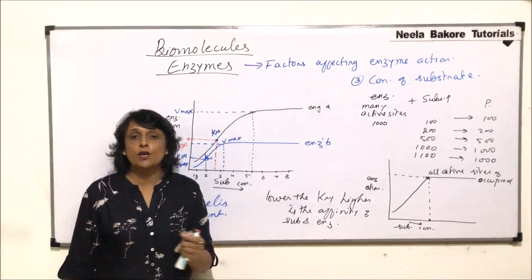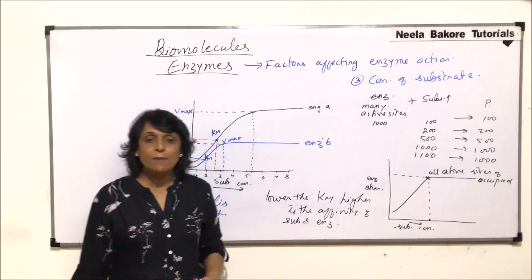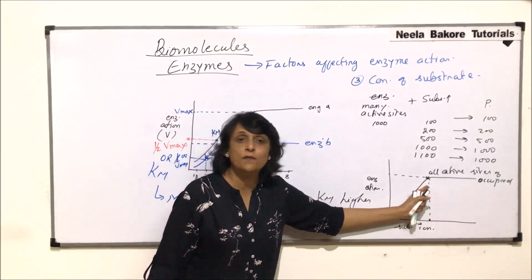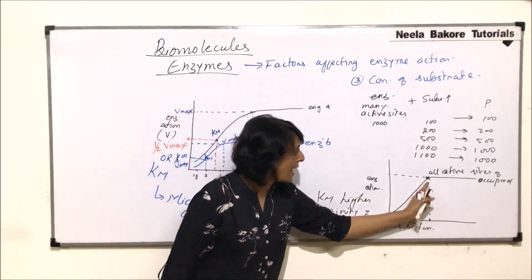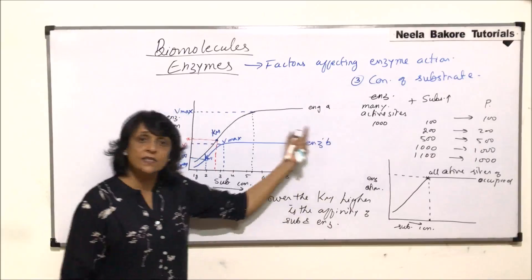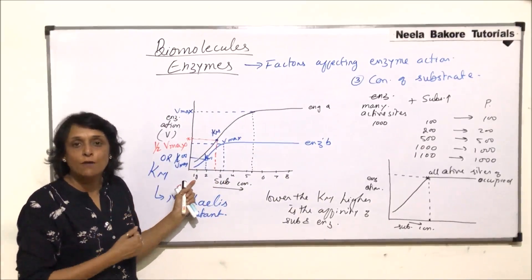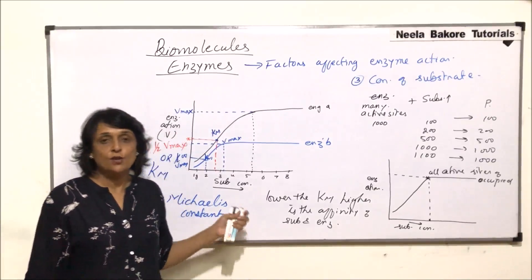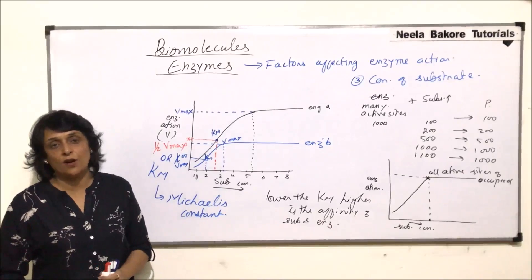So our third factor was concentration of substrate — the effect of substrate concentration on enzymatic action. In simple terms: with increasing substrate concentration, the rate of enzymatic activity increases and then becomes steady. The concentration at which it becomes steady means all active sites are occupied. The technical interpretation uses terms like maximum velocity V-max and half of V-max, which is known as the Michaelis constant Km. This is how we interpret the graph based on the factor of substrate concentration.